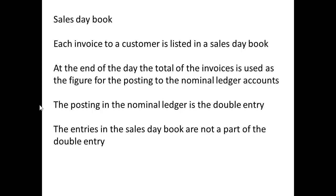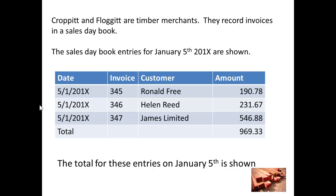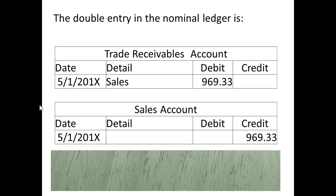Those entries that you make in the sales daybook are not part of the double entry system. Let's have an example here. Cropit and Flogit are timber merchants. Looking at the sales daybook for January 5th, we can see three entries have been made. Invoices have been sent to Ronald Free, Helen Reed, and James Limited, giving a total of £969.33. So, our double entry in the nominal ledger would be to debit trade receivables with £969.33 and to credit sales with £969.33. That is our double entry.